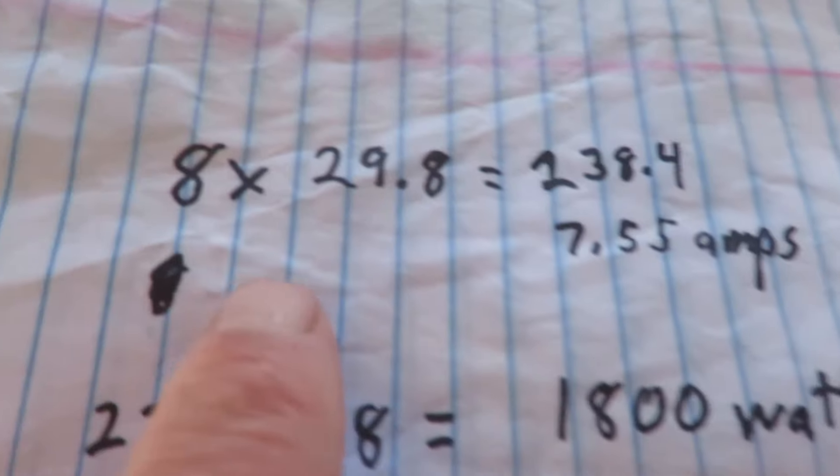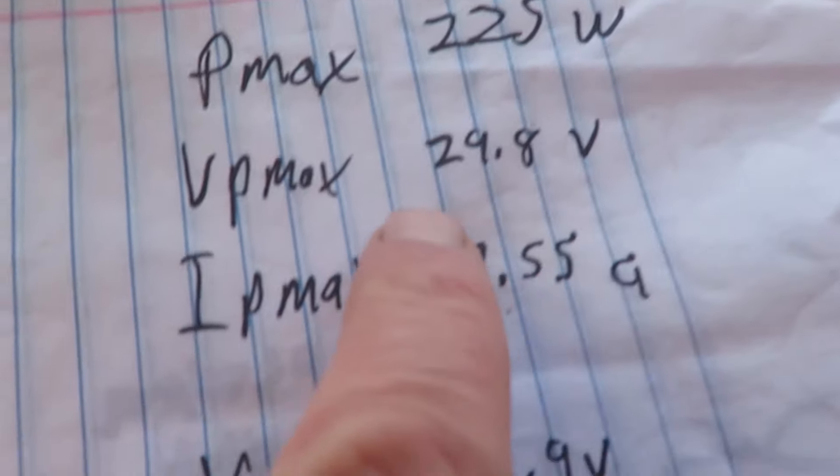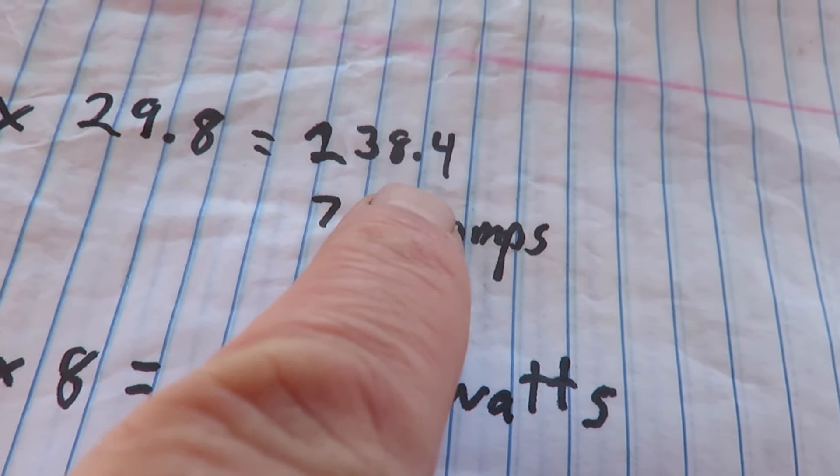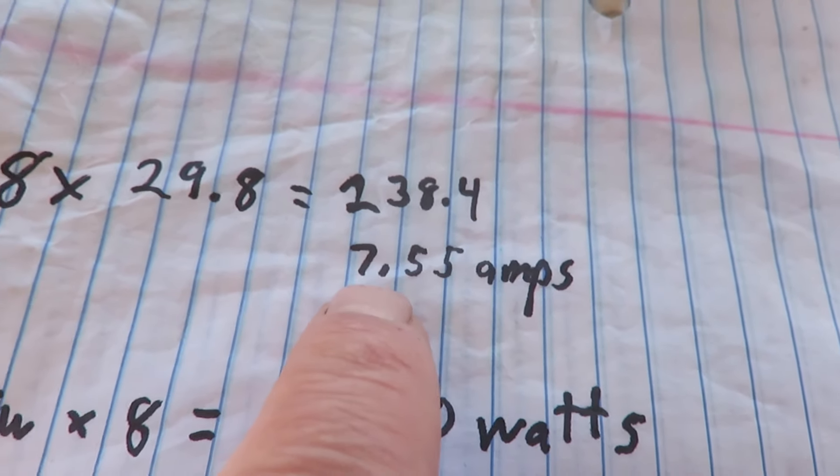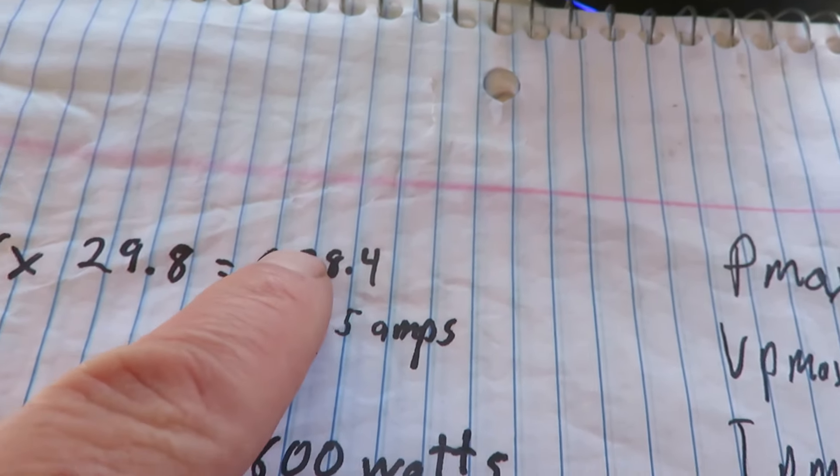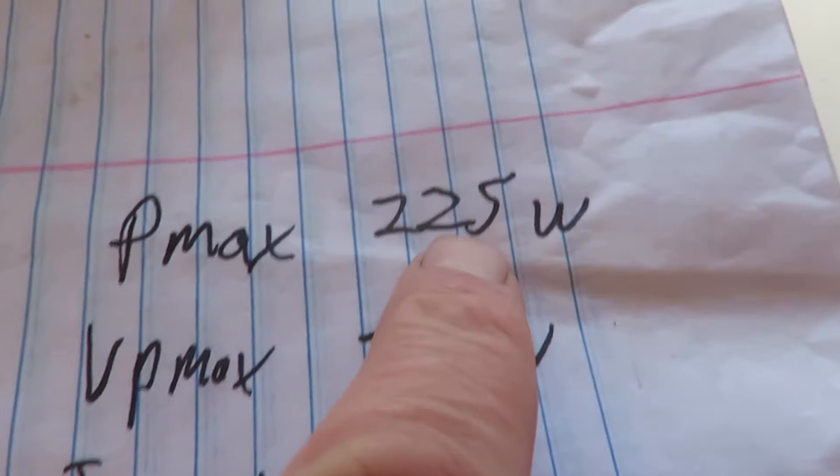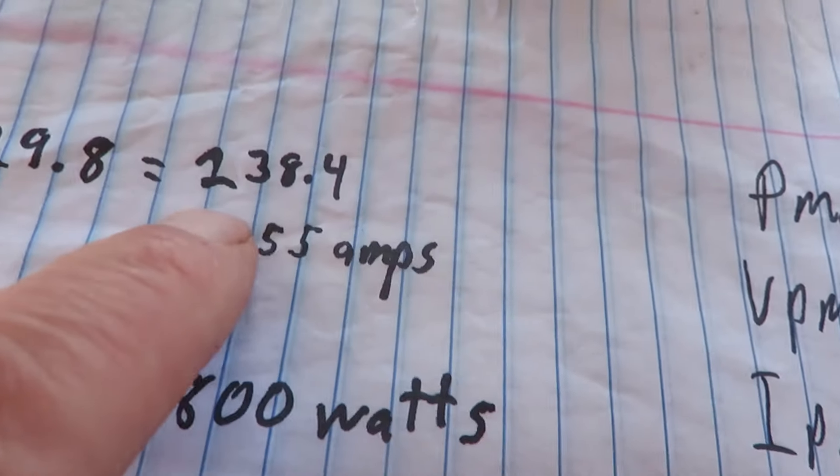But anyway, here's the math on it. 8 times 29.8, that's here voltage maximum, get 238.4 volts. It's almost 240 volts but not quite. And then since they are all in series we don't add the amps, it's the same amps as this, because they are in series. And if we take this times this, we are going to get about this, which is the same as taking this 225 watt, multiply it by 8, you get 1800 watts. So that's the same, that's how that works.